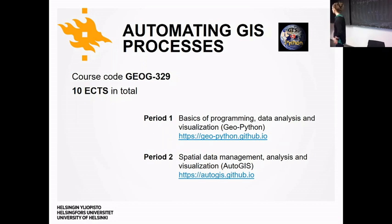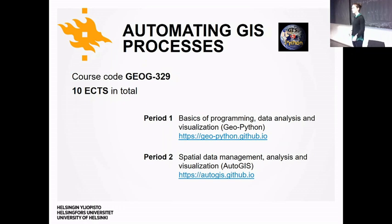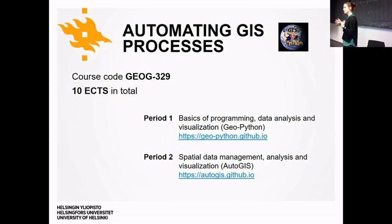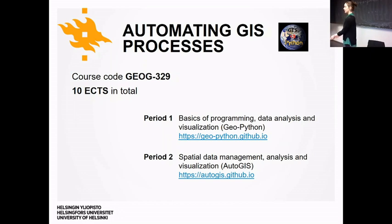By completing these two periods you'll gain 10 credits and get a grade from one to five based on the exercises. In this period two, we will have six weekly tasks to help you learn the lesson contents, and then there will be one bigger final individual assignment.